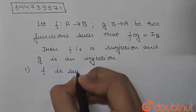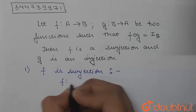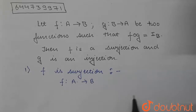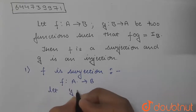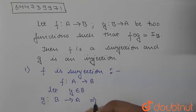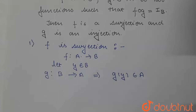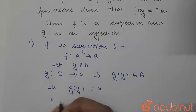So first we start by proving f is surjection. We are given f from A to B, and we have to prove that every element in B has a pre-image in A. We will consider any arbitrary element of B — let y belong to B. Since g maps B to A, g of y will also belong to A. Let g of y be equal to x.